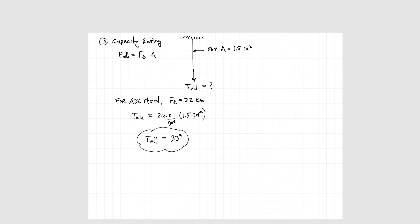If we have a member that has a cross-sectional area of 1.5 square inches, that can be any shape, just as long as the cross-sectional area is 1.5 square inches. Multiply that by our 22 ksi, and we have an allowable tension force of 33 kips.